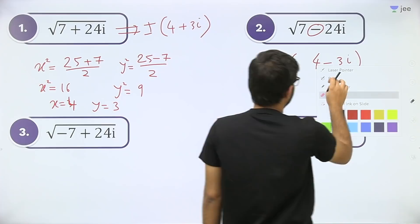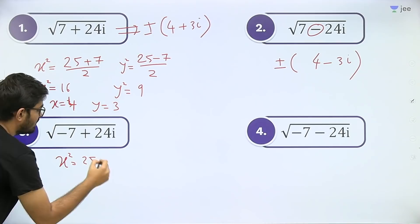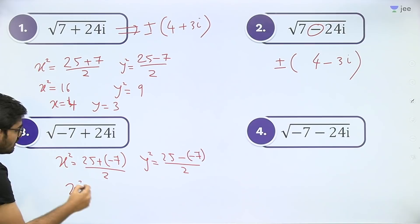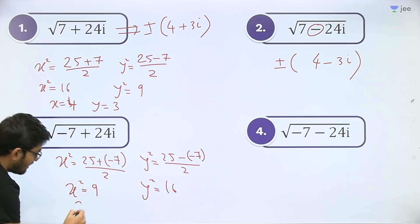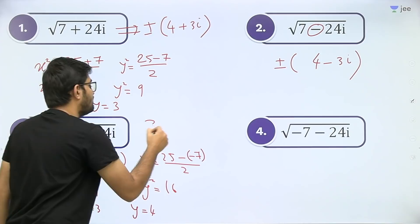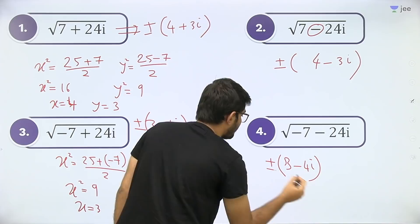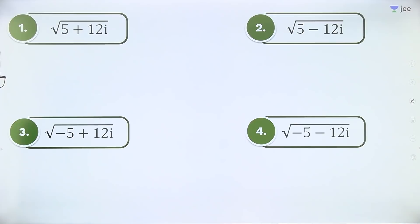Here the value of a is −7. So x² = (25 + (−7)) / 2 = 9, and y² = (25 − (−7)) / 2 = 16. So x = 3 and y = 4. Sign in between is plus, so the answer is ±(3 + 4i). That's it.